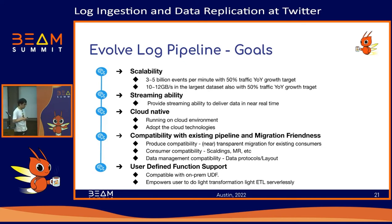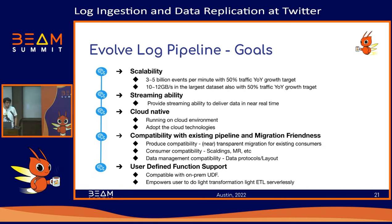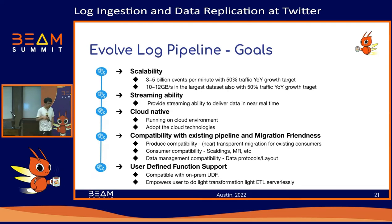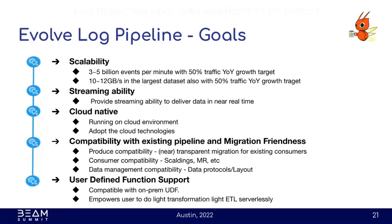The fourth point is compatibility. Given the scale and migration complexity, the new pipeline must be compatible with existing pipelines for a friendly migration. Compatibility has three aspects: first, producer compatibility — we have more than one million clients, so producers should be able to publish data the old way without changing their code, since that would require updates from hundreds of teams. Second, consumer compatibility — though we want to enable streaming, many existing ETL jobs still consume data via Scalding, MapReduce, or Presto, and we want to maintain that compatibility.